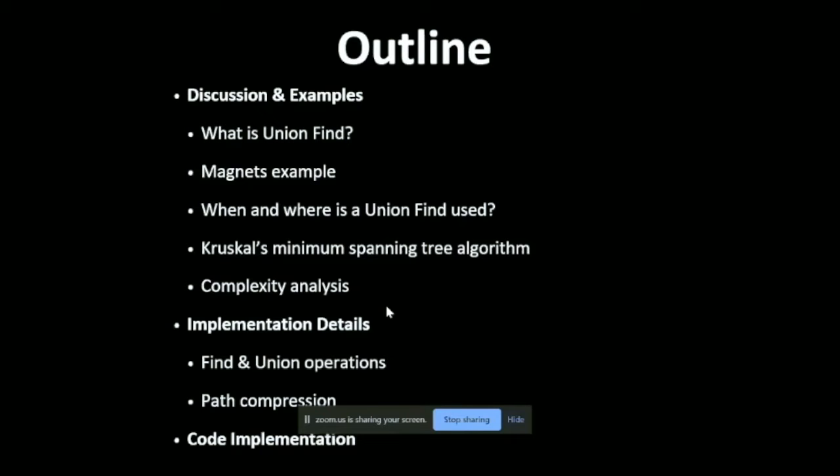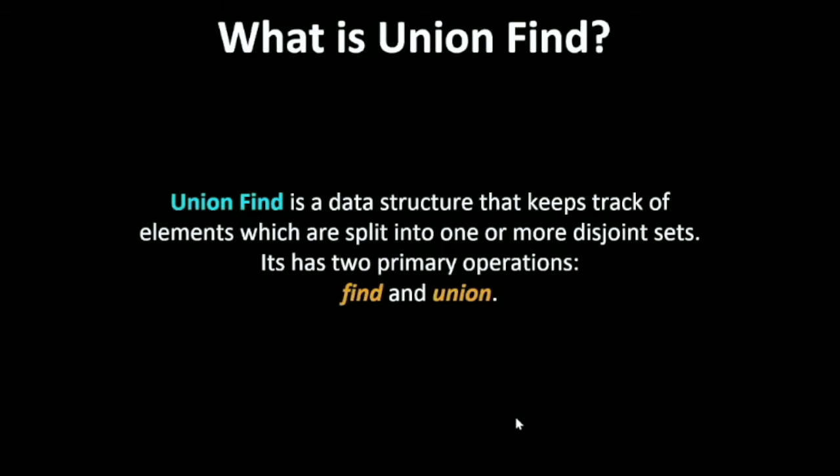This is just the outline of what I'm going to cover. I may not be able to cover all these topics, but I'll let you know what is Union Find in some basic terminologies. Union Find is a data structure that keeps track of elements which are split into one or more disjoint sets. It has two primary operations: Find and Union.